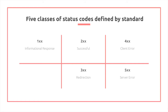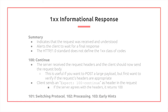The 100s indicate that the request was received and understood, but it also means that the client needs to wait for a final response. Note, however, the HTTP 1.0 standard does not define the 100 class of codes. 100 specifically refers to the server receiving the request headers, and the client should now send the request body. You typically use this if you're performing a POST request with a large payload, but want to first verify that your headers are appropriate. The client would send an EXPECT 100-Continue as its header in their request. If the server agrees with the headers, it returns the 100, and afterwards you can send the POST request.